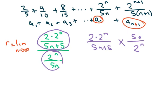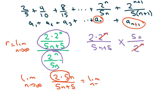And then when you multiply this out, these two will cancel. So we have the limit as n approaches infinity of 2 times 5n over 5n+5. Now this equals 10n. So we've got limit as n approaches infinity of 10n over 5n+5.